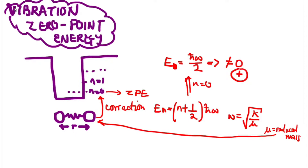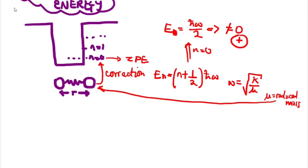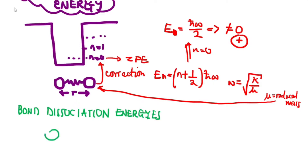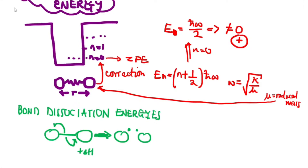Building on this concept, vibrational zero point energy has significant implications. Starting with bond dissociation energy analysis: bond dissociation energy is the energy required to break a particular bond in a molecule. If you have a molecule with a target bond, the energy required to break that bond and form two radicals is most likely an endothermic process, meaning it requires energy for this process to occur.